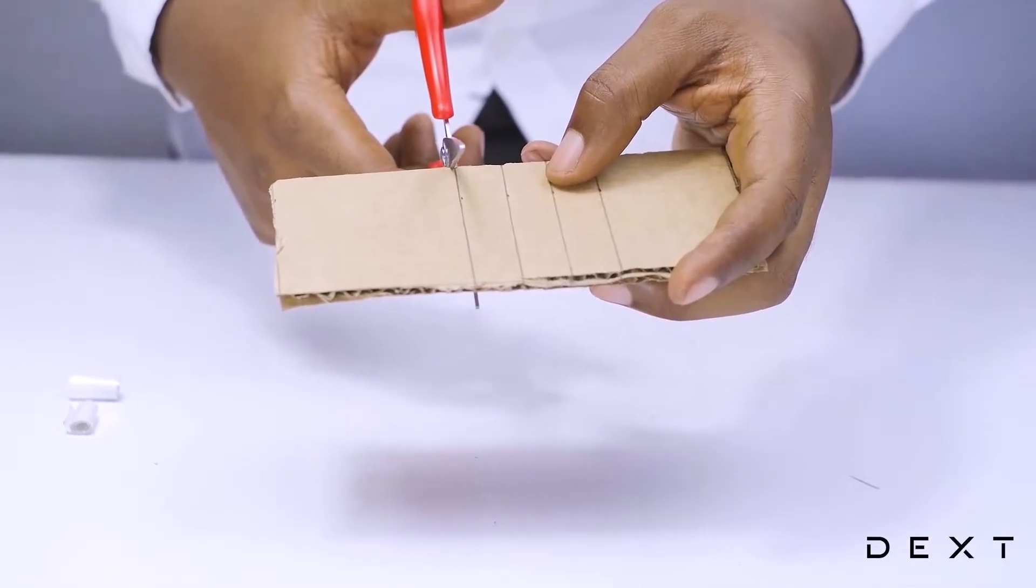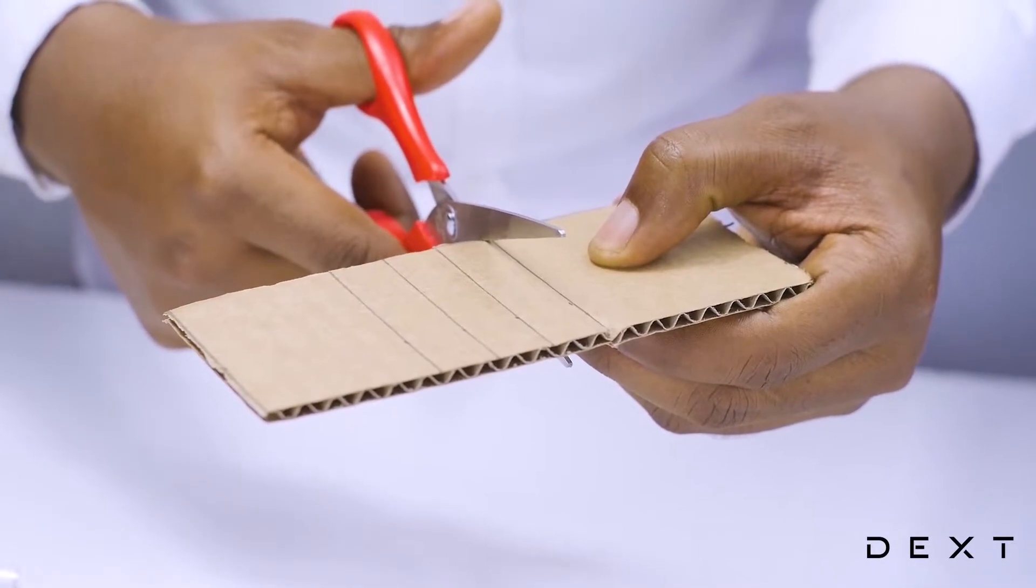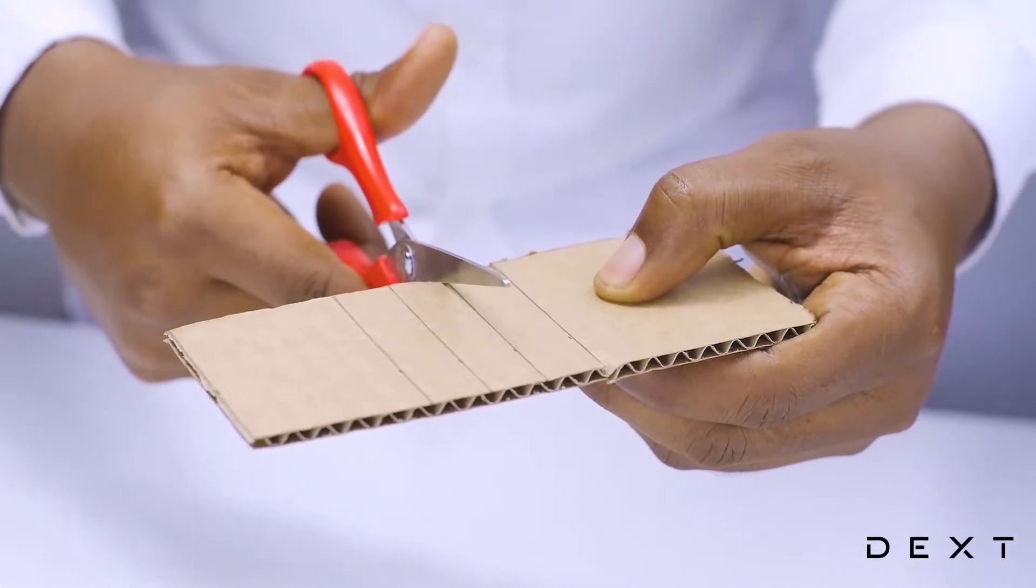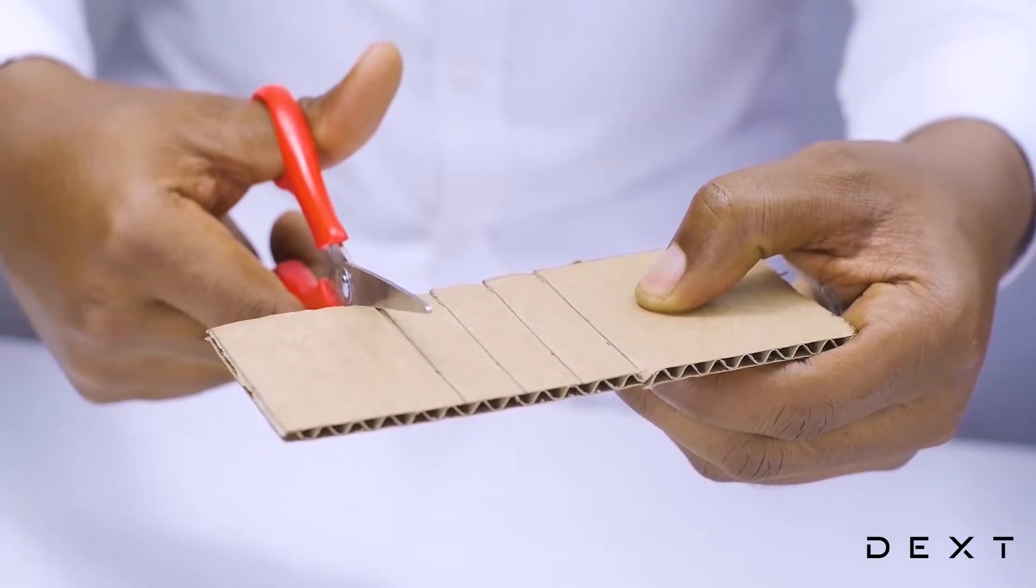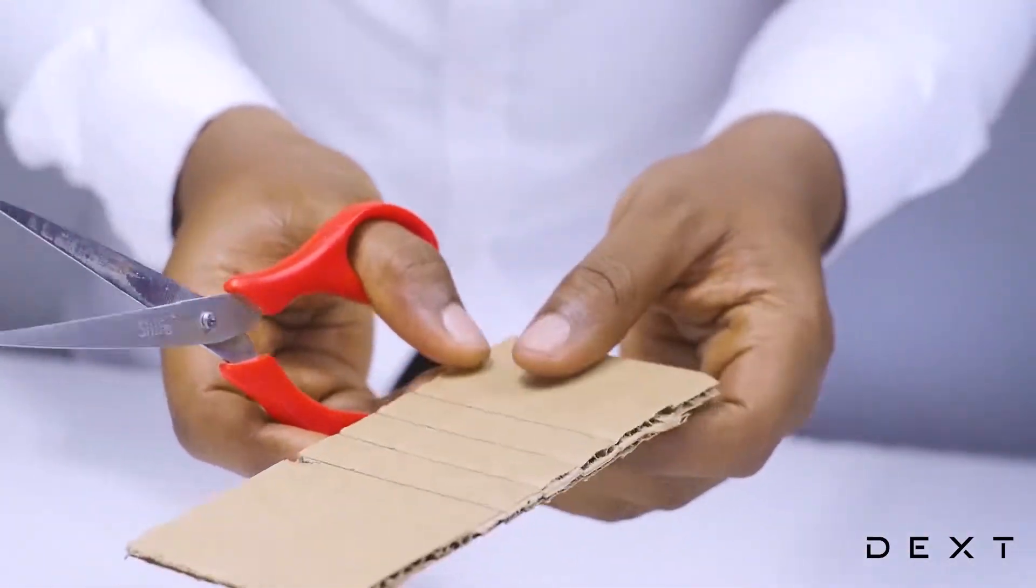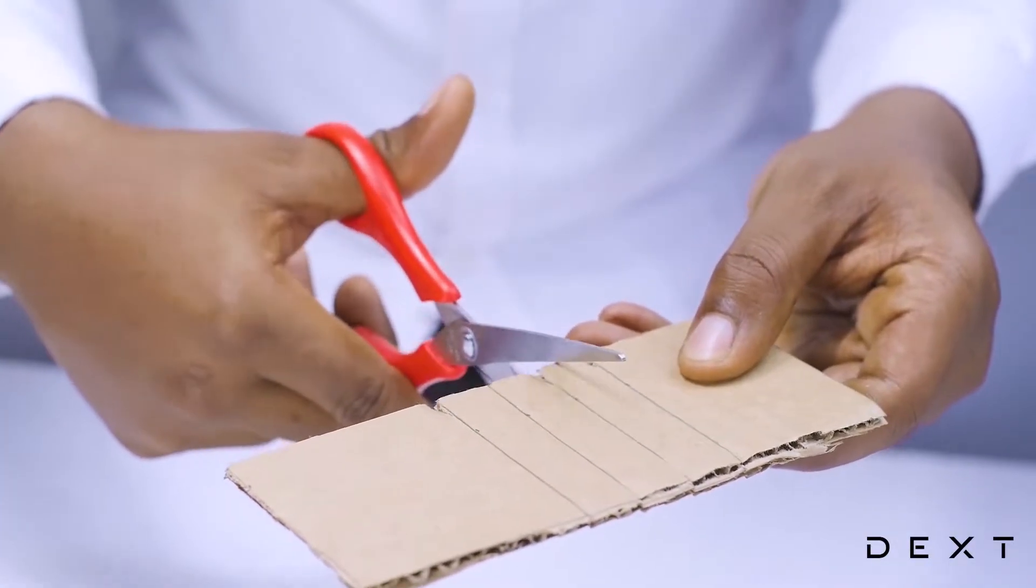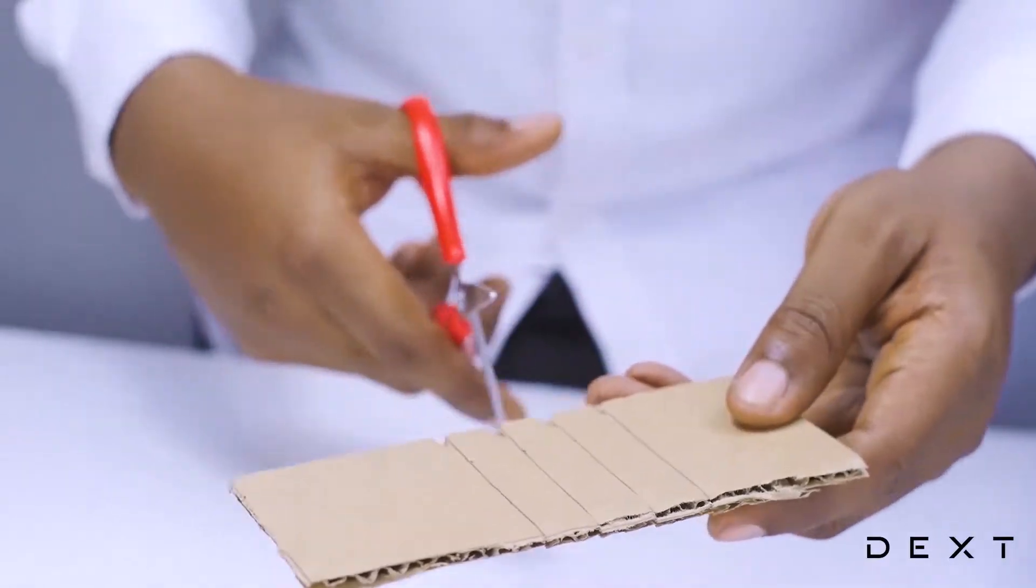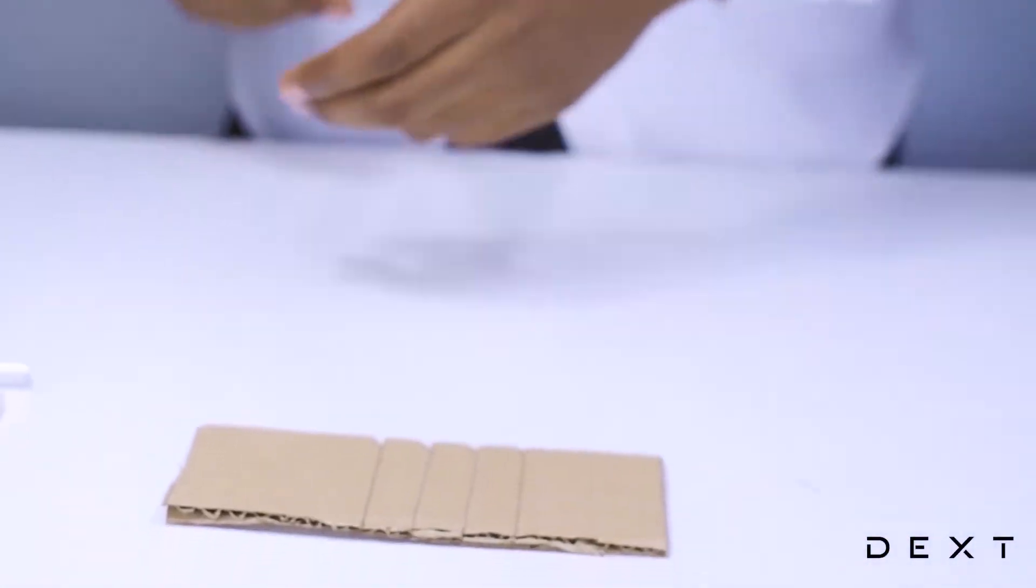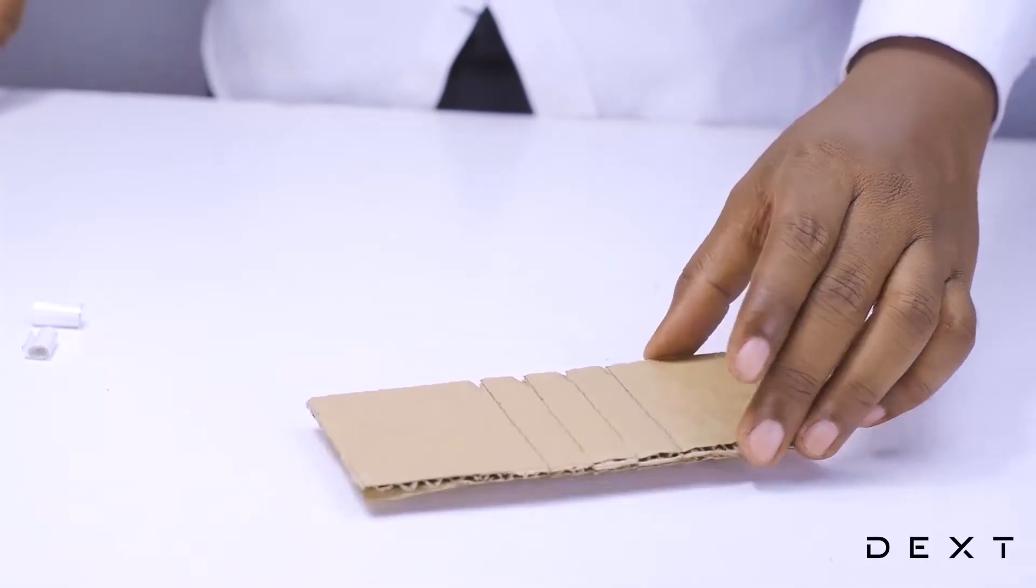Now that we are done, we are going to cut some slits about 1 cm deep along the lines that we drill in our rectangle. Just like this. And we do it on both sides. Good. Now we are done preparing our corrugated cardboard. We are going to get back to that later.